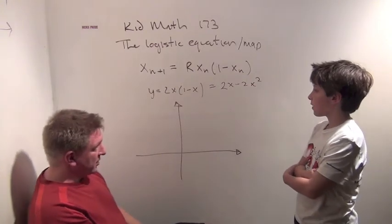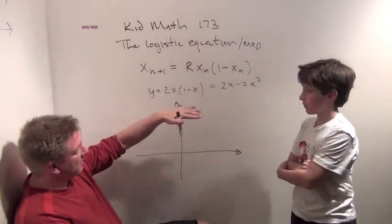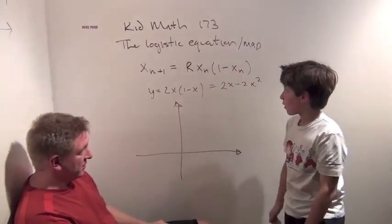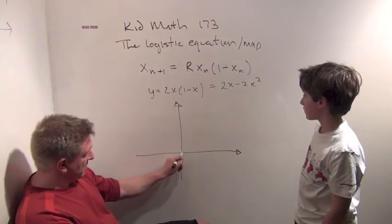Now what are the roots of this quadratic equation? What x values make this quadratic equation equal to 0? x equals 0. The y value is 0.